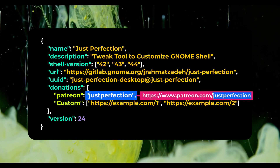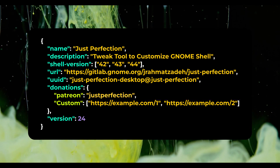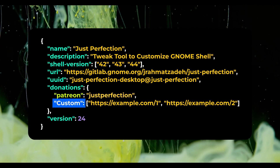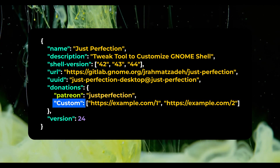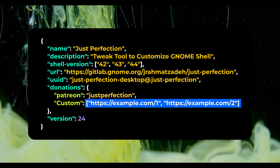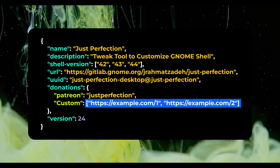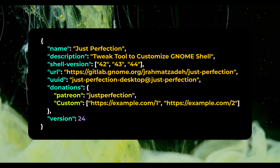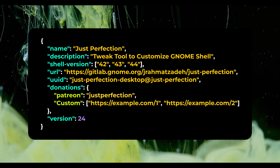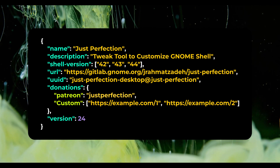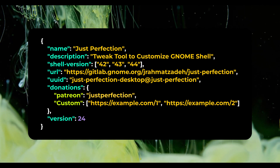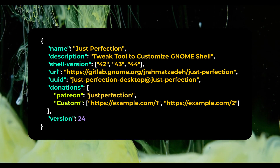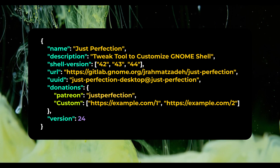If you are using something that is not included in these keys, you can use the custom key — in that case you should use the full URL. By the way, if there is a popular platform that isn't included in the keys, please open an issue on the EGO repository or simply leave a comment here.